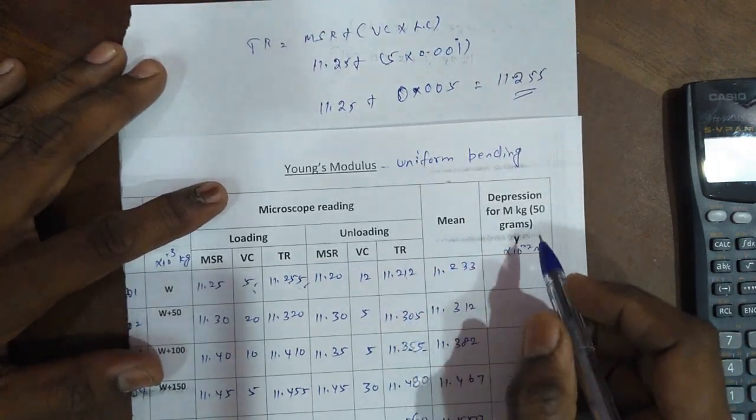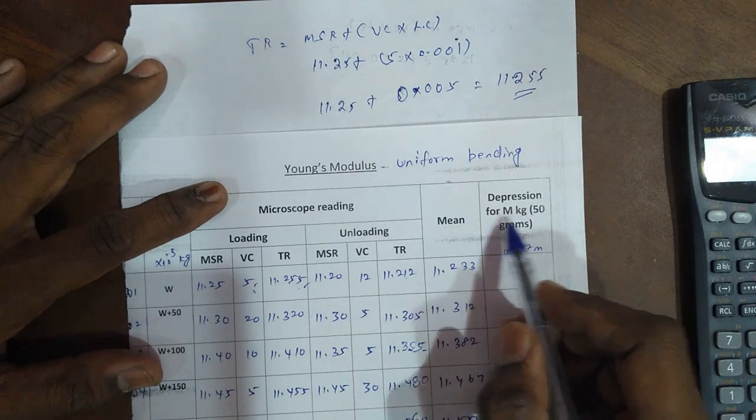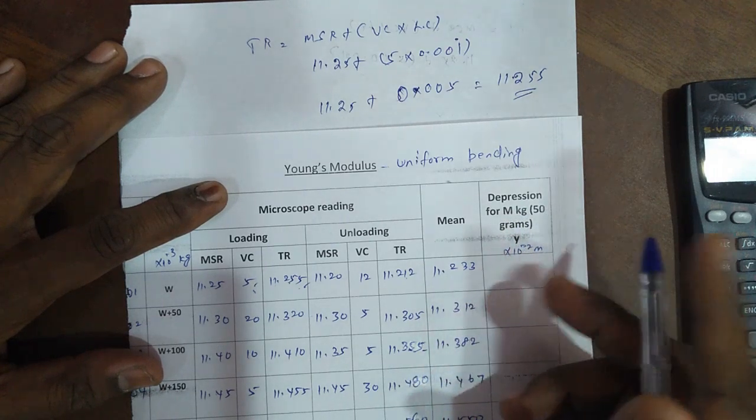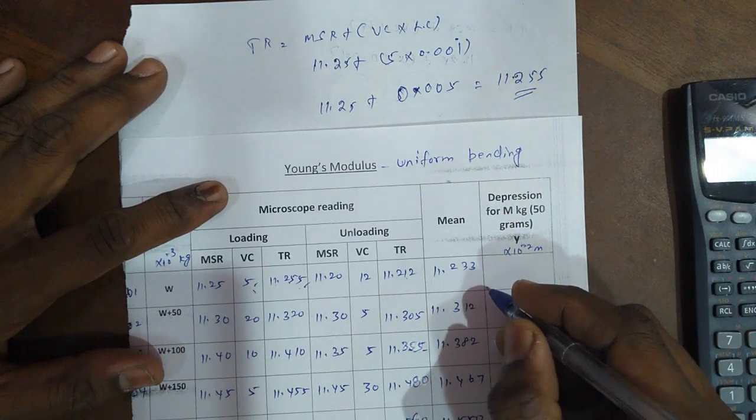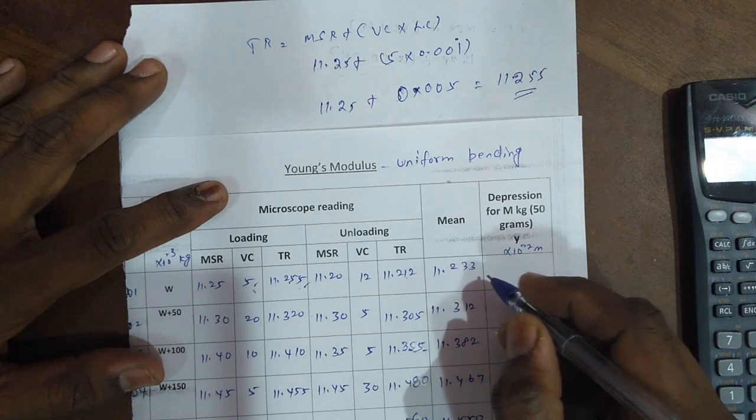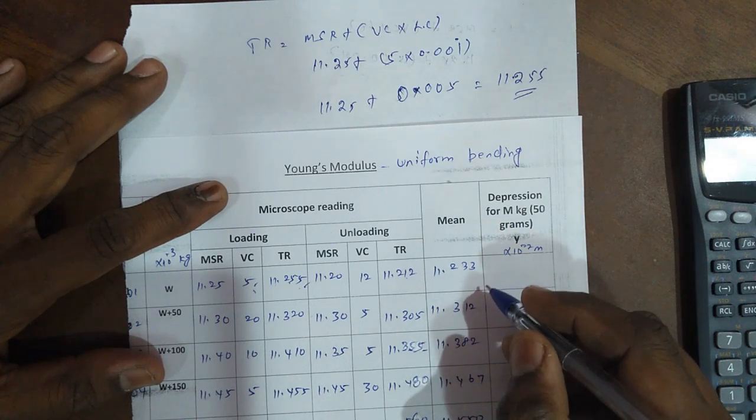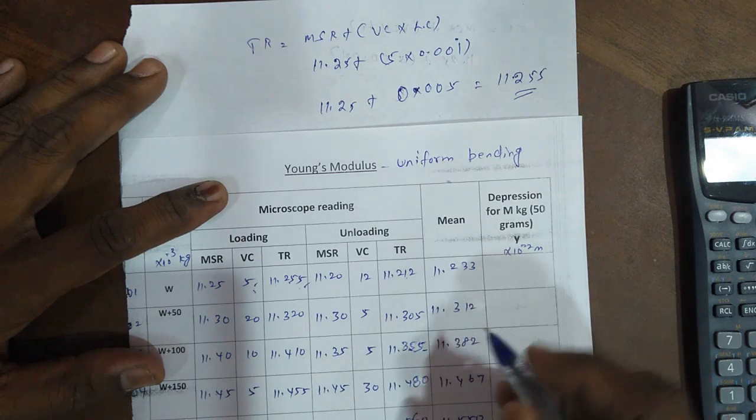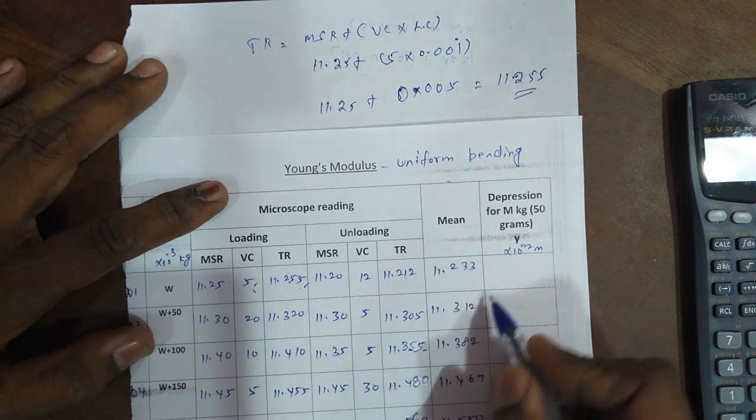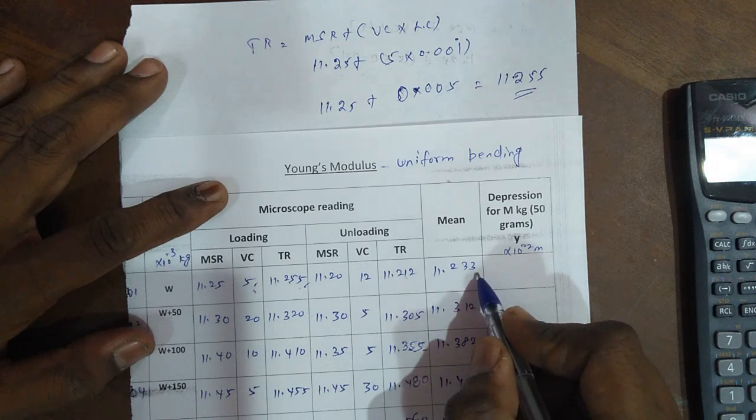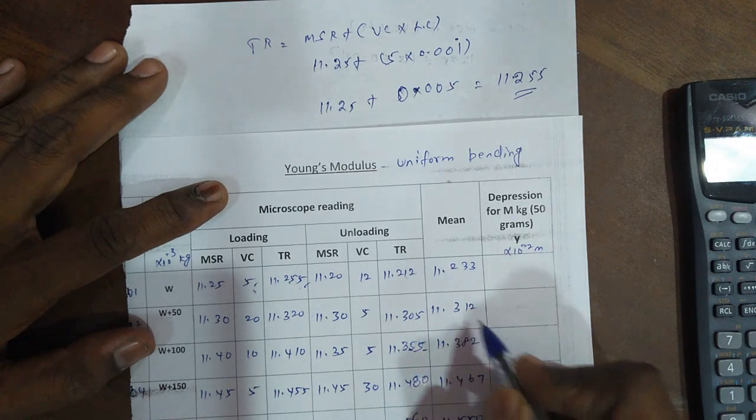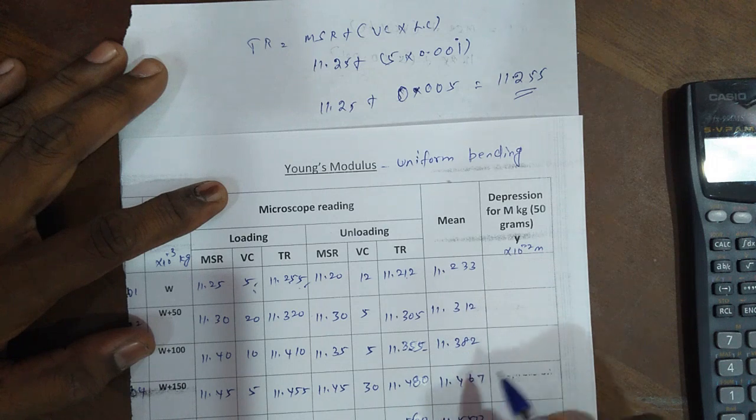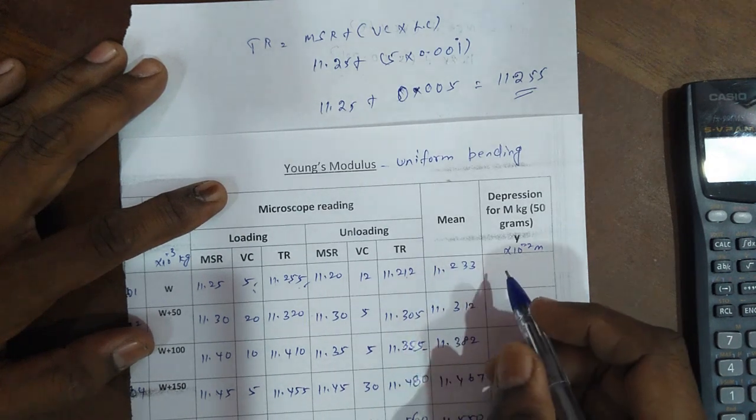What are the mean values? Next, we will find the depression values, depression for M kilograms. Now in this calculation, we use 50 grams. For example, depression between 50 grams increments. That is why using 50 grams depression. For example, W plus 50 minus W, then W plus 100 minus W plus 50, W plus 150 minus 100. This is the same way.